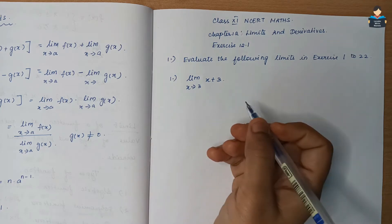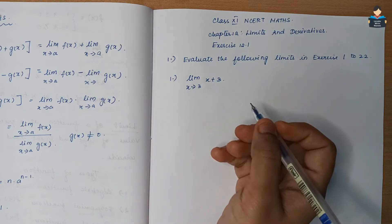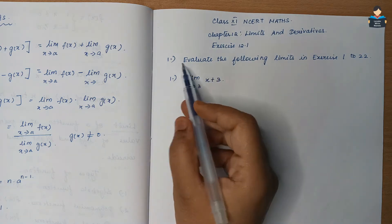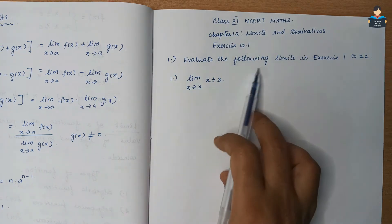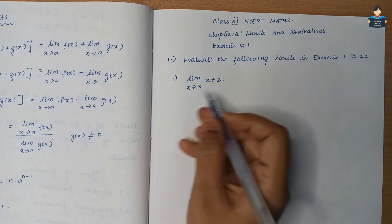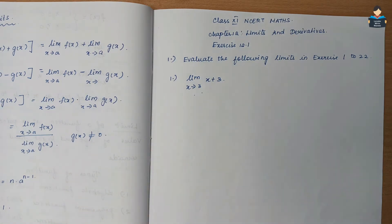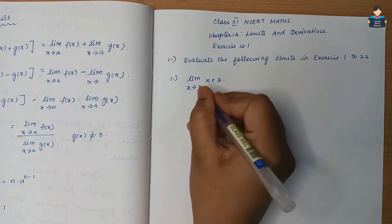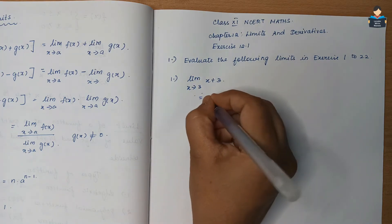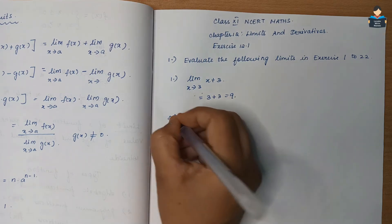Hello everyone, welcome to our channel. In this video we cover Class 11 NCERT Math Chapter 12, Limits and Derivatives, Exercise 12.1. First sum: evaluate the limit as x tends to 3 of x plus 3. We substitute x = 3, giving 3 plus 3 which equals 9.